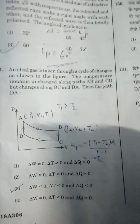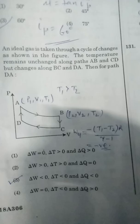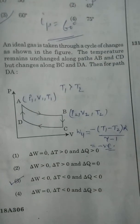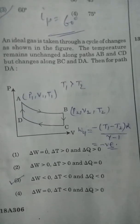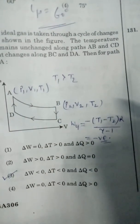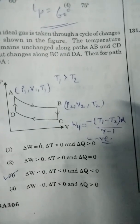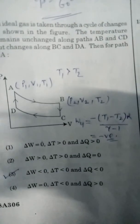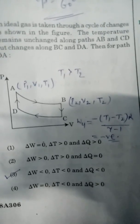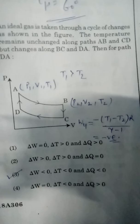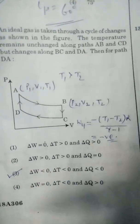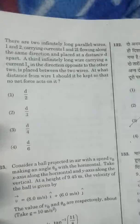An ideal gas cycle where temperature remains unchanged along AB. AB and CD are the isothermal curves, and BC and DA are adiabatic. The work along the cycle is minus (T1 - T2) times R by (gamma - 1). Here T1 is greater than T2, so delta W is negative. The change in work for this process is negative, delta T is also less than zero, and delta Q is also less than zero. Correct option is option number 3.